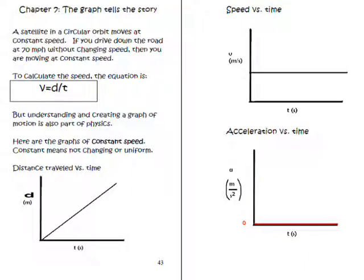So let's say you drive down the road at 70 miles per hour without changing speed and you're moving at constant speed or constant velocity. Our equation for that would be the average speed would be distance divided by time, V=d/t.